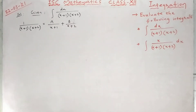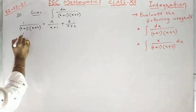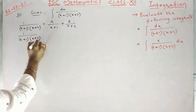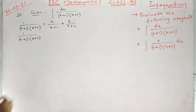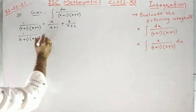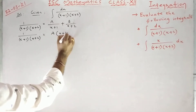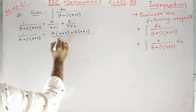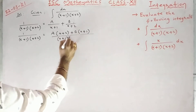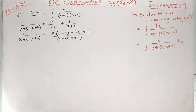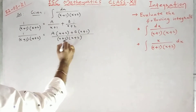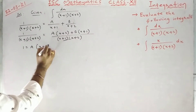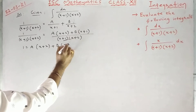Take LCM. Whenever we have linear factors in the denominator, we can take A/(x+1) and B/(x+2) directly. A(x+2) plus B(x+1) upon (x+1)(x+2) is the LCM. So we can cancel this, and we get 1 = A(x+2) + B(x+1).